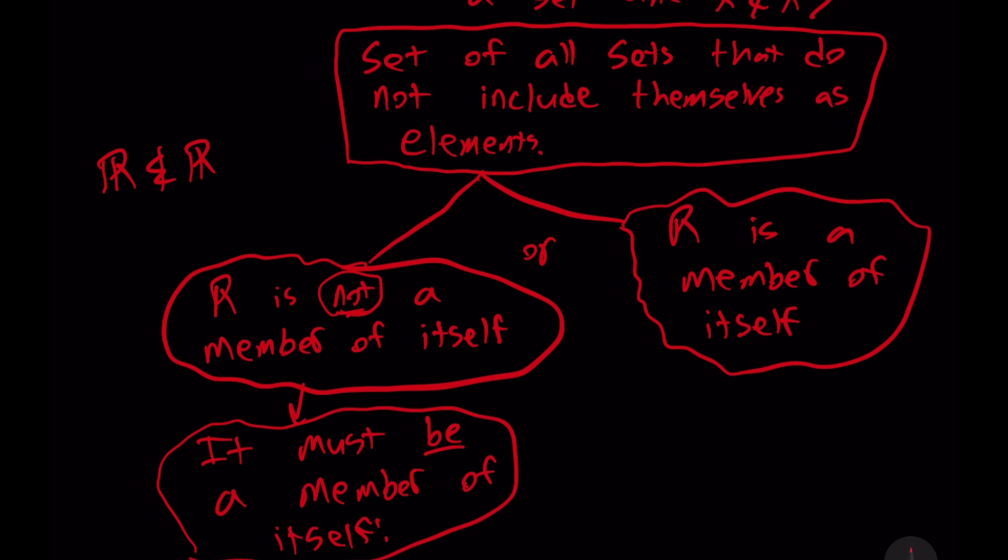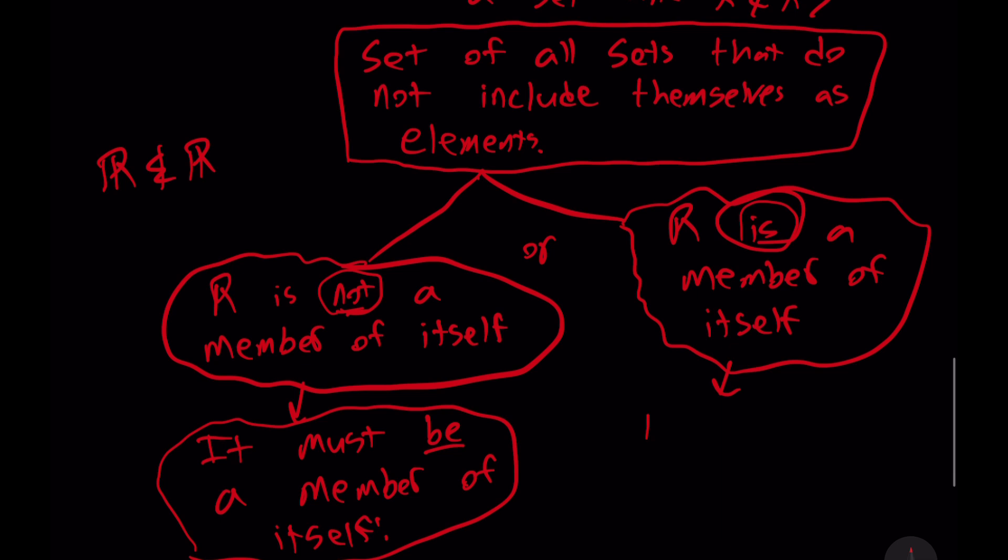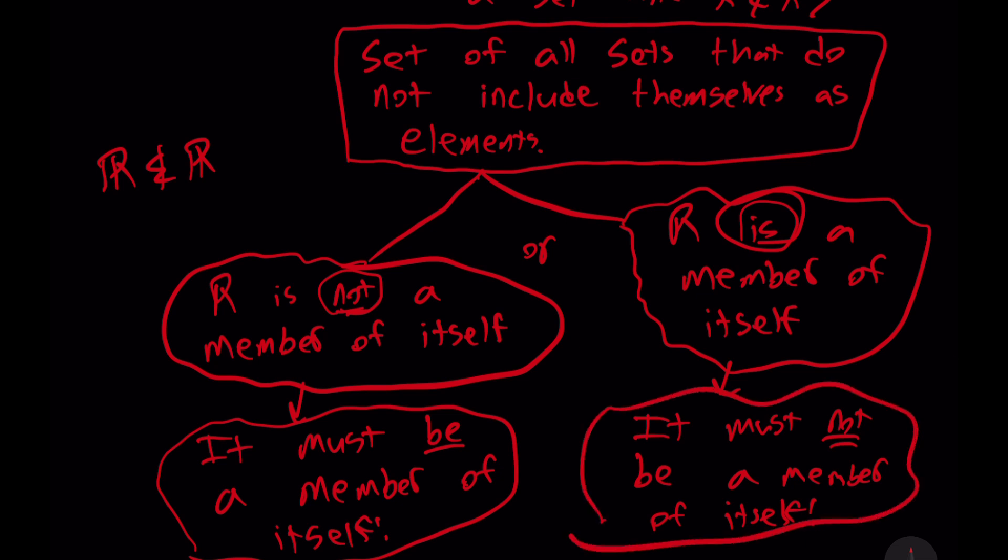And on the other hand, if R is a member of itself, it thereby must not be a member of itself. Since we are told, again, at the very outset that R contains all sets that are not members of themselves. We have a contradiction. If we assume R is a member of itself, we are led to the conclusion that it is not.